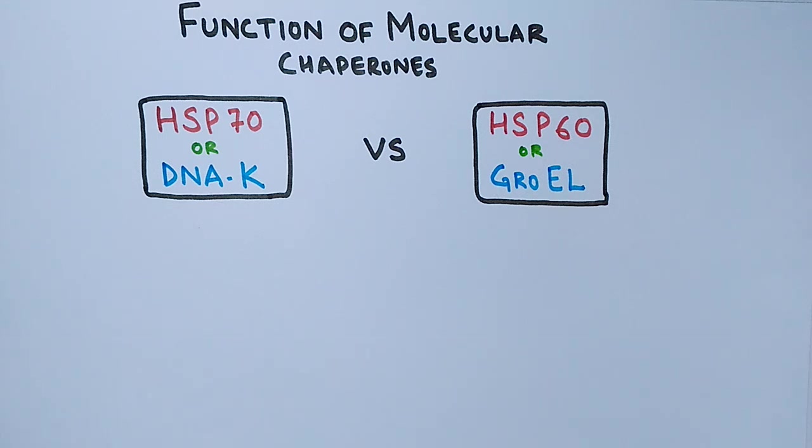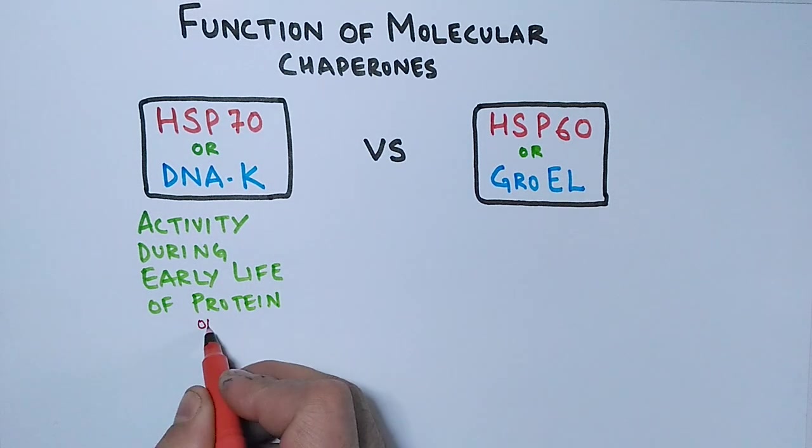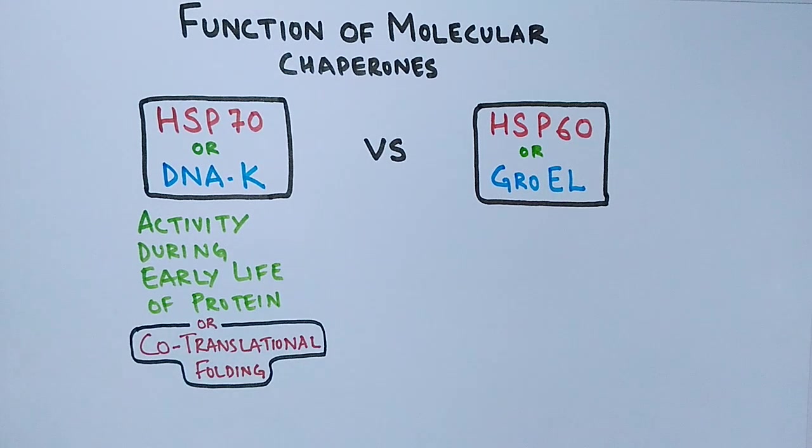The difference lies in their time of activity. The HSP70 or DNAK shows activity during the early life of protein, or sometimes it shows co-translational folding, which we have already discussed. On the other hand, we have HSP60 chaperone, which works after the protein has been completely synthesized, that's after translation. HSP60, or we can say GroEL in case of prokaryotes.